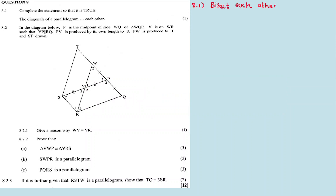For 8.2, in the diagram below, P is the midpoint of side WQ of triangle WQR. U is the midpoint of side WR of triangle WQR. UPV is on WR such that UPV is parallel to RQ, and then PV is produced by its own length to S. PW is produced to T, and ST is drawn.